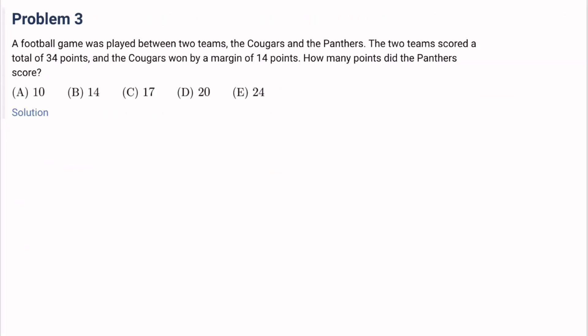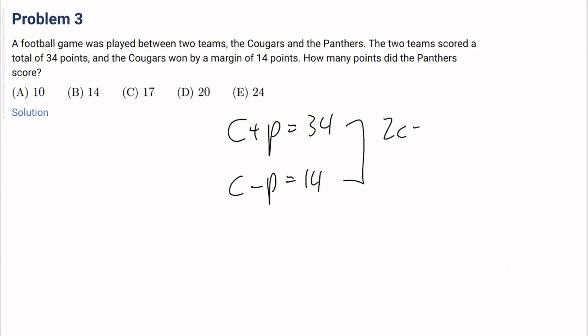Number 3: a football game was played between the Cougars and the Panthers. The two teams scored a total of 34 points, and the Cougars won by a margin of 14 points. How many points did the Panthers score? Cougars plus Panthers equals 34, and Cougars minus Panthers equals 14. So 2 times Cougars equals 48, Cougars equals 24, Panthers equals 10. It's A.